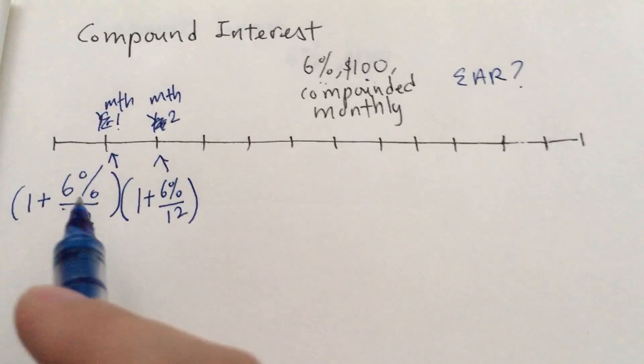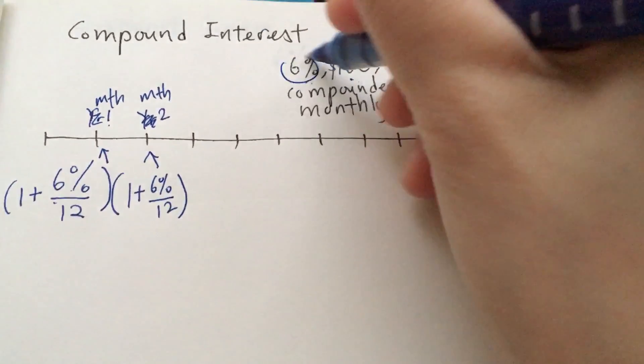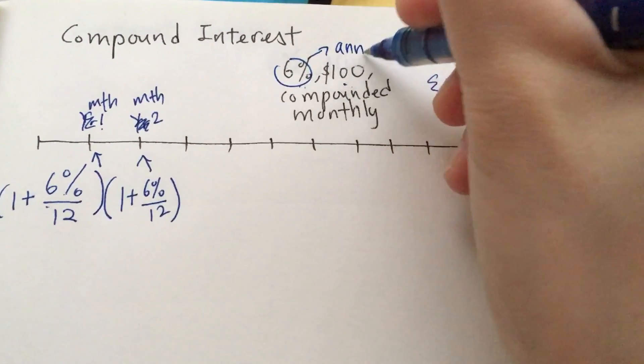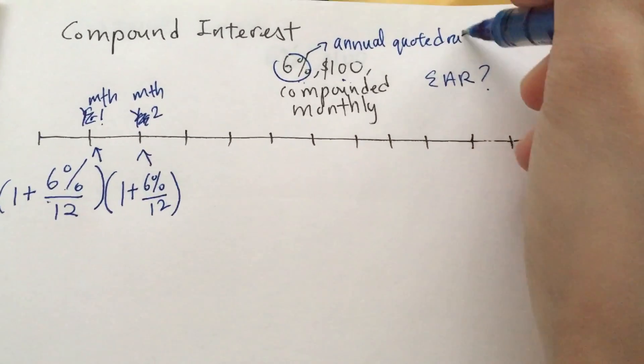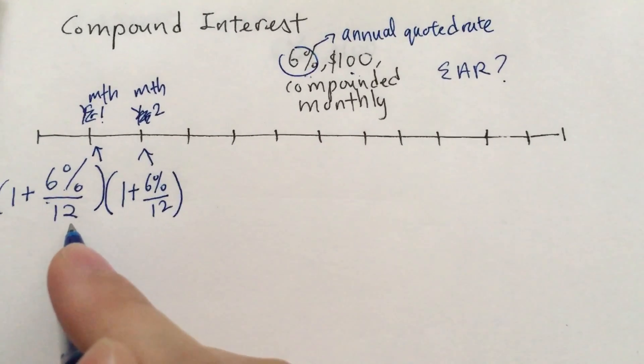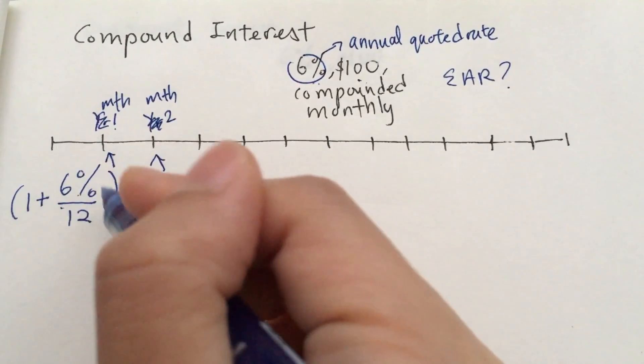In order to find the monthly interest rate, we take 6%, which is the annual quoted rate. Remember, this is the annual quoted rate divided by 12 months. So this is the monthly interest rate.